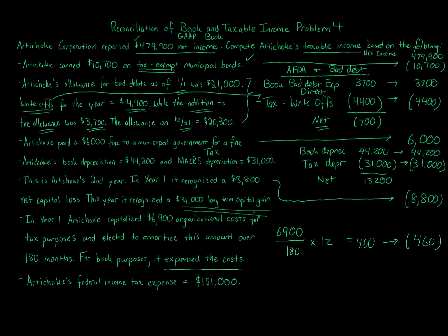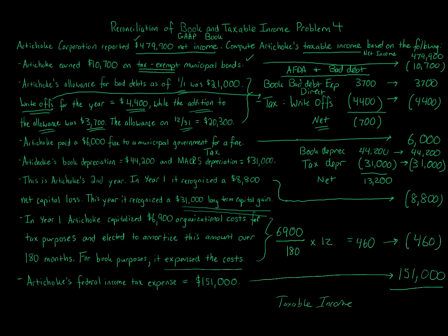Finally, Artichoke's federal income tax expense is $151,000. The tax law does not allow a deduction for federal income tax expense. For book purposes, income tax expense reduces net income, but for tax purposes, you don't get that deduction. So we add back the $151,000. Starting with $479,900 and applying all these adjustments gives us taxable income of $629,440.